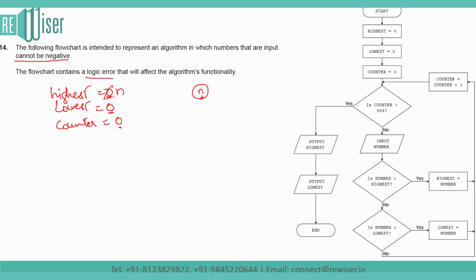The lowest variable already contains the smallest value. So whatever positive number you input, it is obviously greater than 0. This means the condition 'number less than lowest' will never be true, so the lowest variable's value will always remain 0 because negative inputs are not allowed and 0 will permanently be the lowest number. There is no way that it would change — that's the logical error in this question.